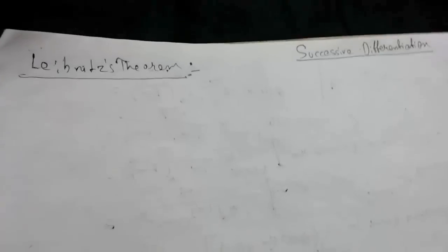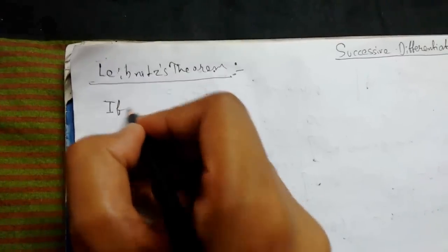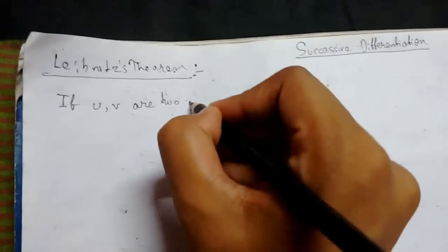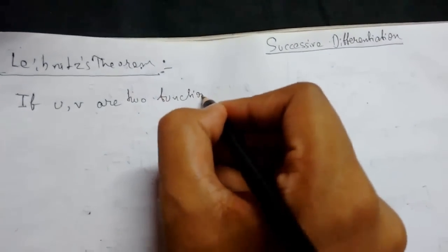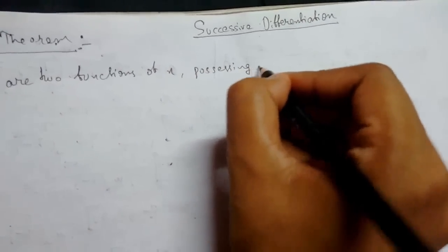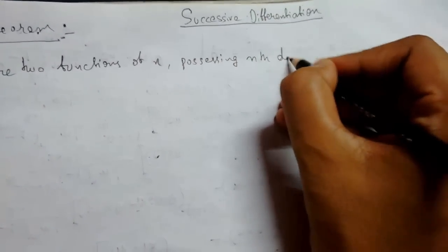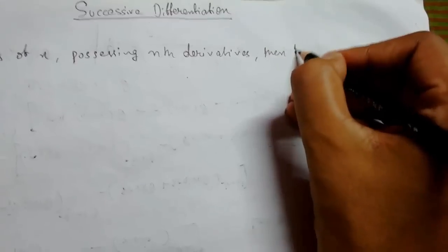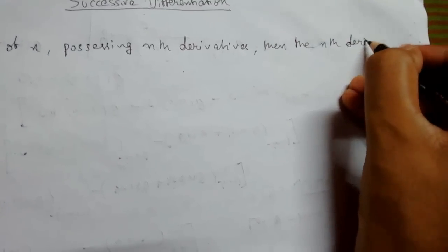By the help of Leibniz theorem it is possible. So let's get started. First we'll take the definition: If u, v are two functions of x possessing nth derivatives, then the nth derivative of the product